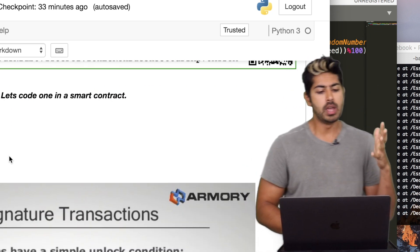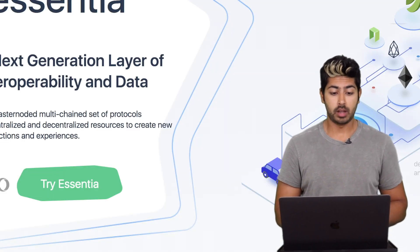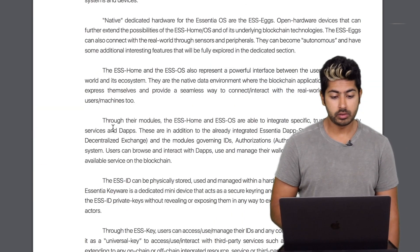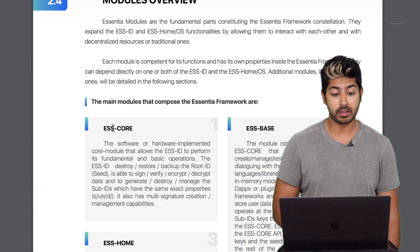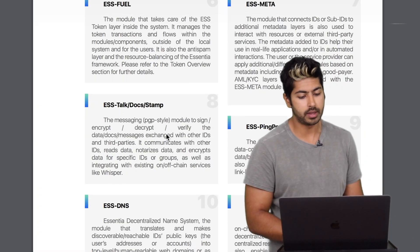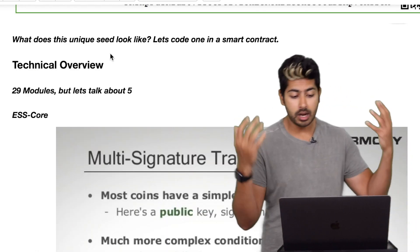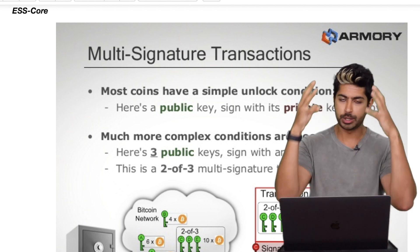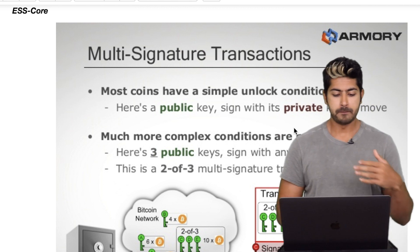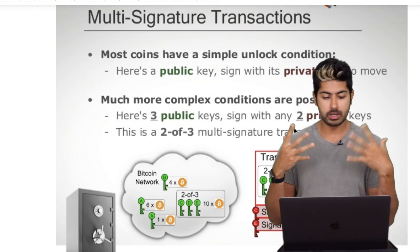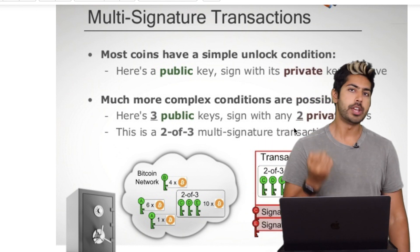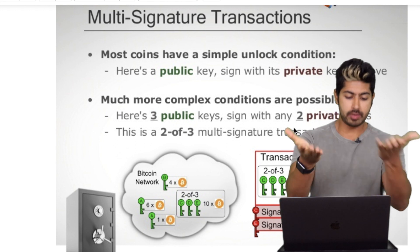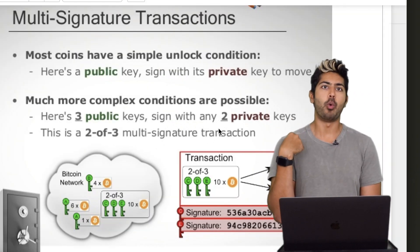Technical overview time. Looking at Essentia's white paper, there are 29 different modules — which is very ambitious. You can see a list: ESS home, ESS core, ESS base, ESS office, ESS config, and more. ESS core is really interesting — it allows the ID to be destroyed, restored, and backed up, and also allows for the creation of multi-signature capabilities. Multi-signature transactions are very popular in the blockchain community.